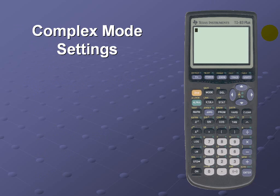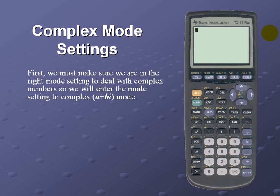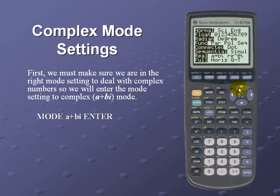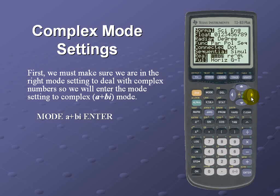Complex Mode Settings for the calculator. First we need to make sure that we're in the right mode settings to deal with complex numbers, so we will enter the mode and change our settings to complex or a + bi mode. To accomplish that, first go to mode, select a + bi which is the complex form, scroll down to the right, and press enter to lock it in.